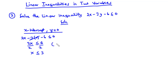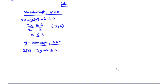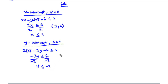Now for the y-intercept, we set x = 0: 2(0) − 3y − 6 ≤ 0. This gives −3y ≤ 6, and dividing through by −3 we get y ≥ −2. We have the point (0, −2).